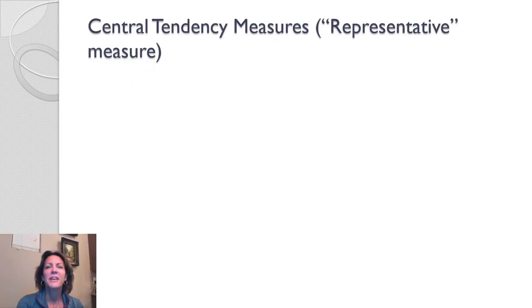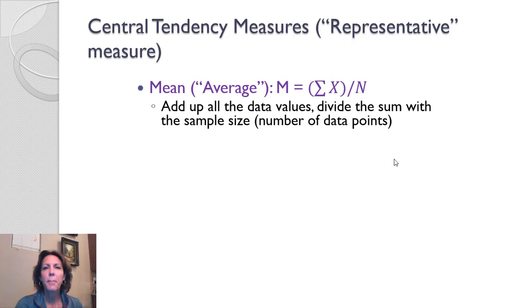Central Tendency Measures. Central Tendency is a representative measure. In other words, it tells where most of the scores cluster, the most likely score in a distribution. There's a couple of different ways of showing Central Tendency, and the one that you are most familiar with is the average, or what we call in statistics, the mean.